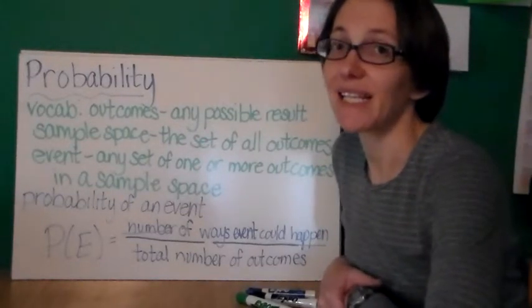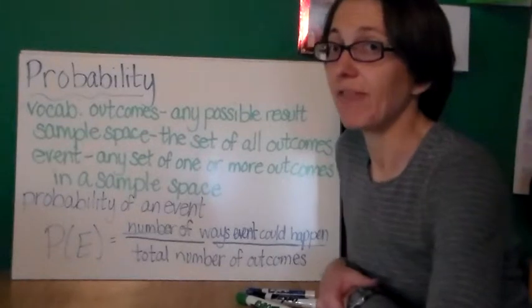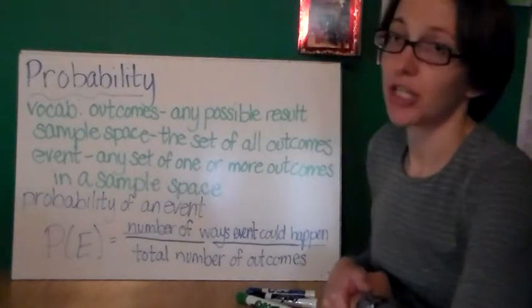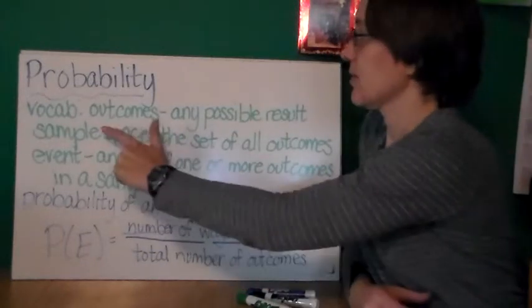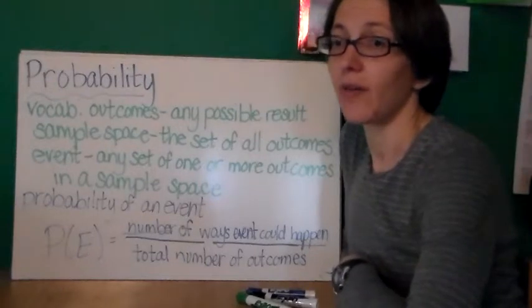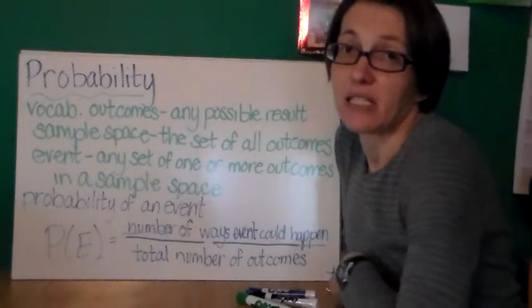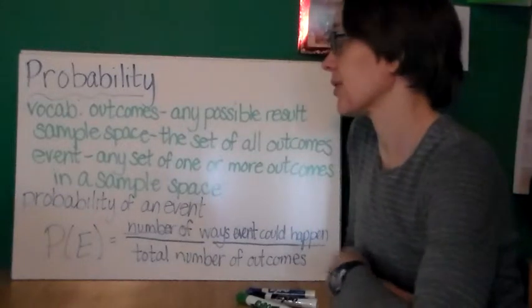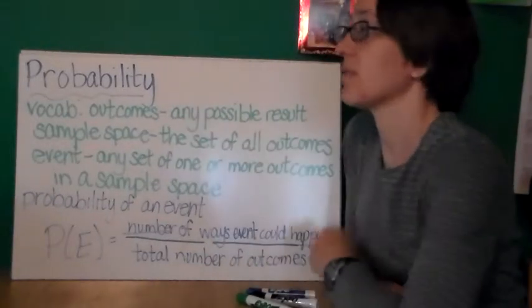Probability discusses how likely it is that a specific event is going to happen. So some vocabulary that you should know. We have outcomes. Outcomes are any possible result of what in math is called an experiment, where we don't already know what the outcome will be. So an outcome is any possible result.